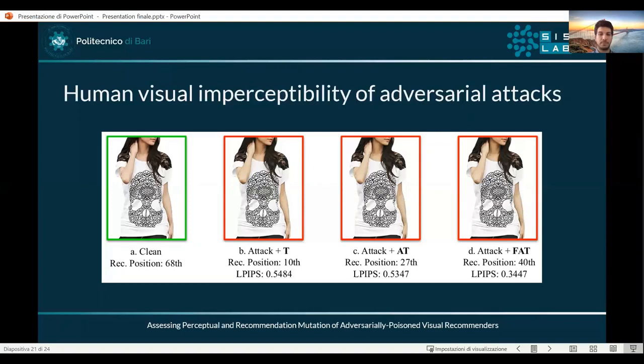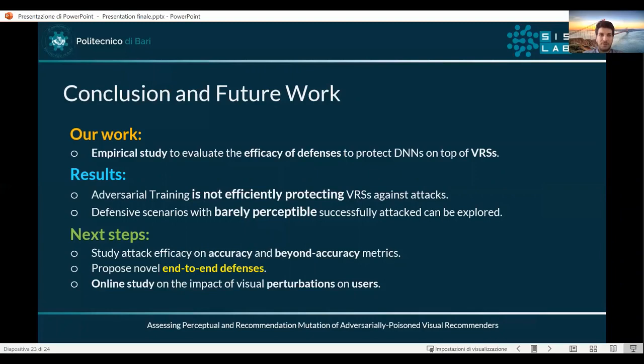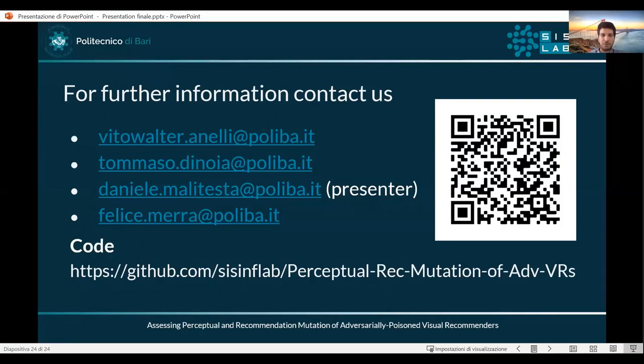Finally, we can draw some conclusions and provide directions for future work. This work was an empirical study to evaluate the efficacy of defensive techniques when applied to deep neural networks on top of visual-based recommender systems. The obtained results show that adversarial training is not efficiently protecting visual-based recommender systems, and there exist defensive scenarios which could be exploited by attackers to become more and more effective. For next steps, we are planning to study attack efficacy on accuracy and beyond-accuracy metrics, propose novel end-to-end defensive techniques, and study online the impact of visual perturbations on users. Thank you very much for your attention; for further information you can contact us.